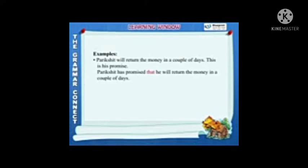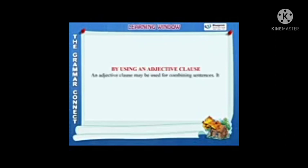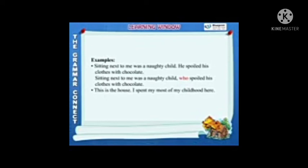Another noun clause example: 'The music class will happen next week. The teacher announced it in the class.' Combined: 'The teacher announced that the music class will happen next week.' An adjective clause gives more information about the noun in the principal clause. Example: 'Sitting next to me was a naughty child. He spoiled his clothes with chocolate.' Combined: 'Sitting next to me was a naughty child who spoiled his clothes with chocolate.' Another: 'This is the house. I spent most of my childhood here.' Combined: 'This is the house where I spent most of my childhood.'